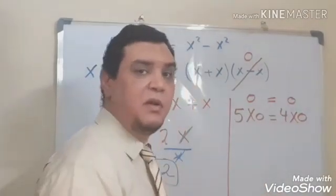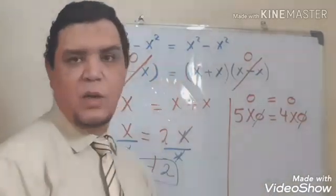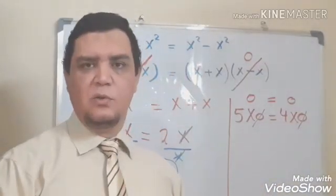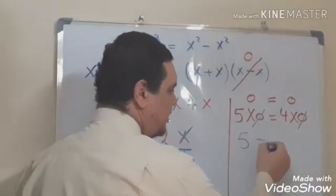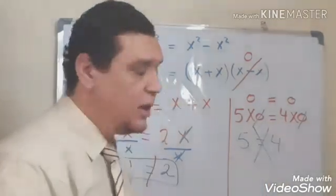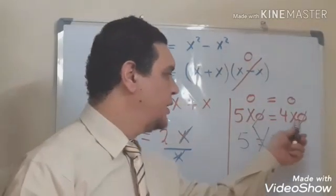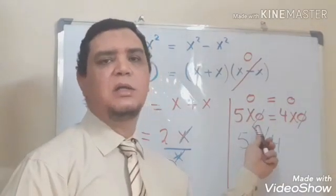Now can we simplify 0 with 0? Actually we cannot simplify 0 with 0. Because 5 equals 4 is wrong result. Then we cannot divide both of the two sides by 0.